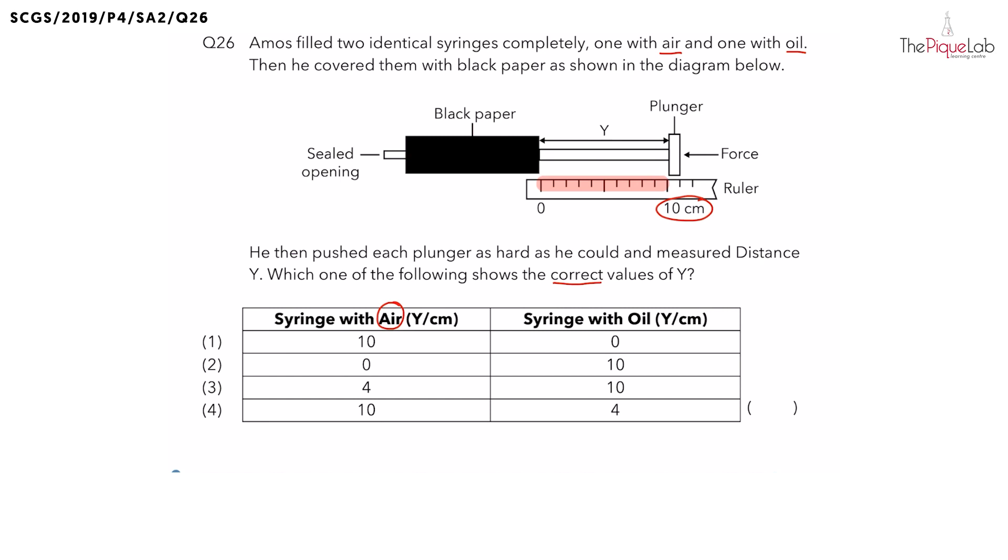Now why is the plunger able to be pushed in when the syringe is filled with air? Remember what is so special about air? If the plunger can be pushed in, this means that air can be compressed. So let's write it down. We know air can be compressed.